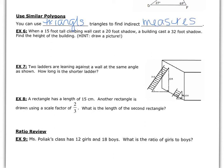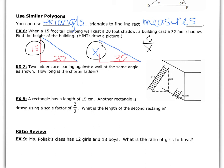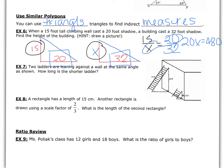A 15-foot-tall climbing wall casts a shadow of 20 feet, and a building casts a shadow of 32 feet. How high is the building? We use triangles because the height is always perpendicular to the ground. Set up the proportion: 15 over X equals 20 over 32. Cross multiply: 20X equals 480. Divide by 20: X equals 24. So the building is 24 feet tall. That's using similar polygons to find indirect measures.